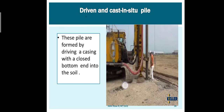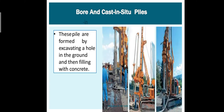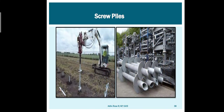Driven and cast in-situ piles: we drive the casing alone inside and then pour the concrete. Bored and cast in-situ piles: we first put a borehole and then pour the concrete in the side. Screw piles have thread-like patterns, similar to the twisted threads on steel nails driven into walls.